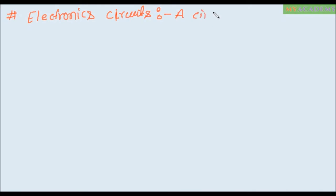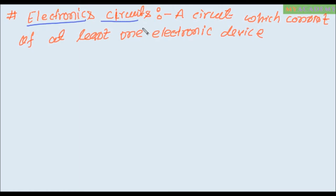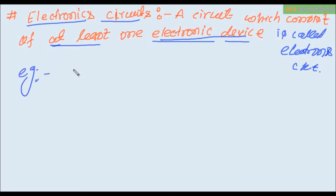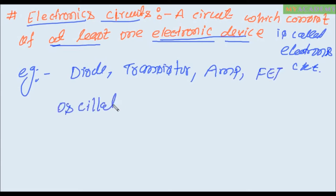A circuit which consists of at least one electronic device is called electronic circuit. Example of electronic device is diode, transistor, amplifier, FET, oscillator, rectifier, etc.